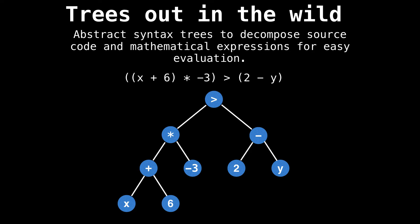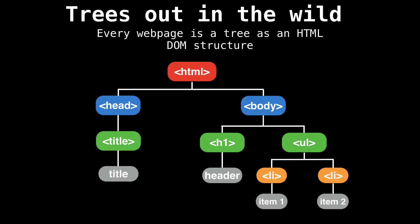Trees are also used to decompose source code and mathematical expressions into what are called abstract syntax trees for easy evaluation. For example, the math expression on this slide can be broken down into a tree structure. Every web page you visit can be thought of as a tree due to HTML's nested tag structure. This tag structure is used to tell your browser exactly how to render a web page and how it should be displayed.